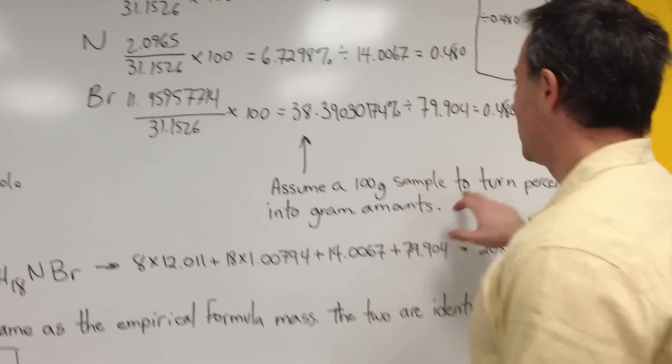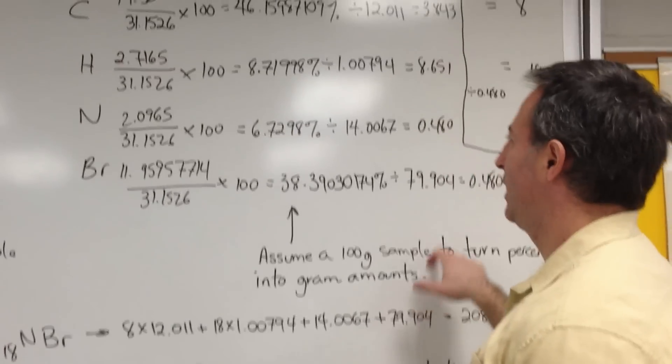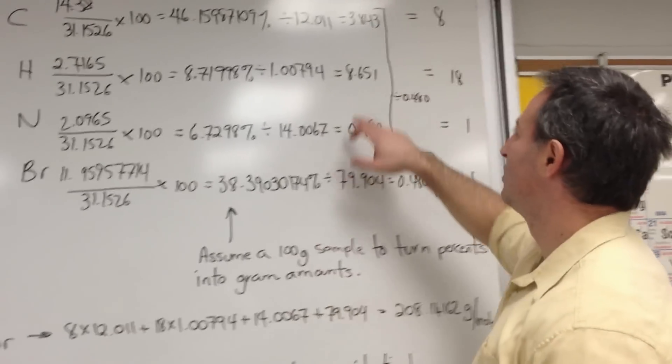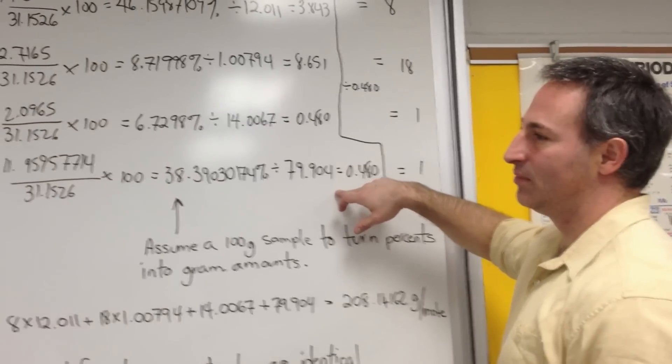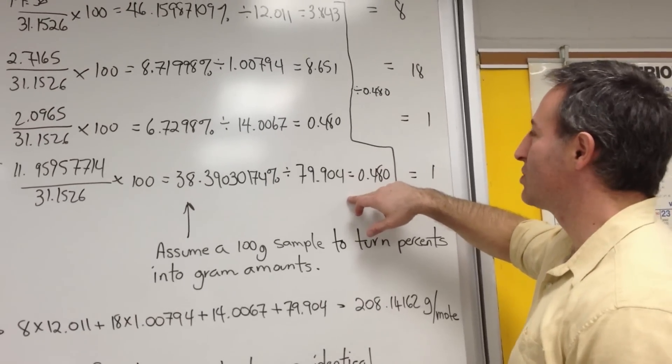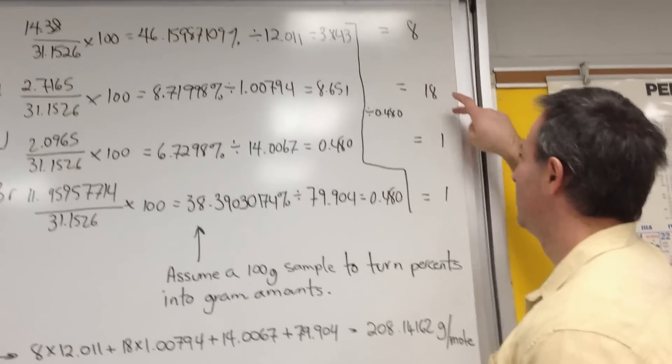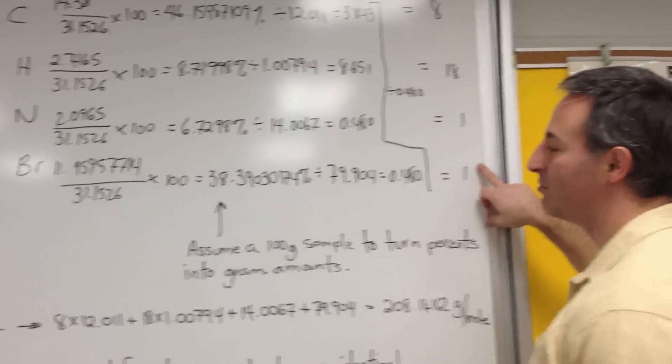Then what I did is I assumed a 100-gram sample to turn percents into gram amounts, and we divide it by the molar mass of each one of the elements to obtain a ratio. Now it wasn't based on integer values, so we divide it by the lowest number in that ratio to obtain an integer value. And that is what we call the empirical formula.